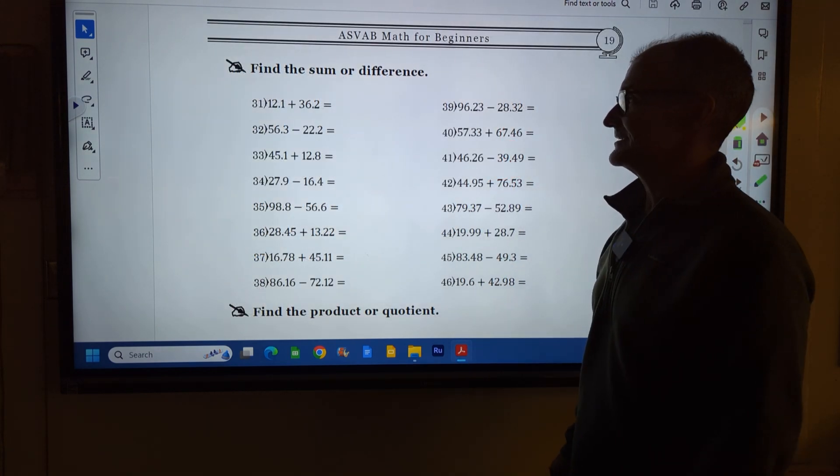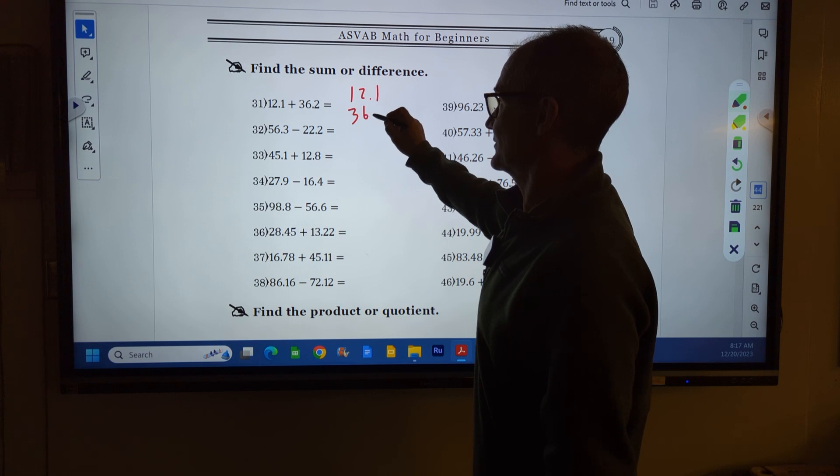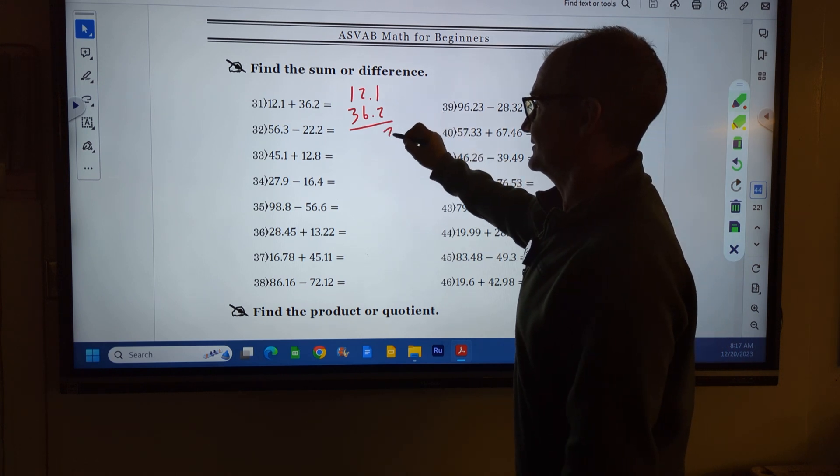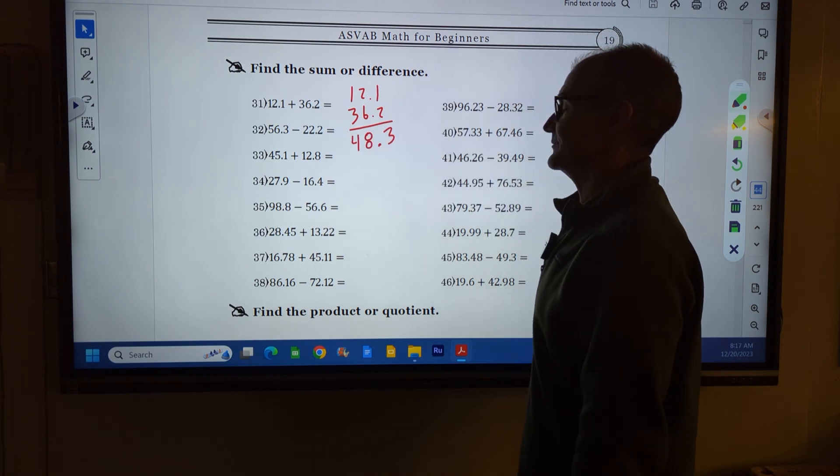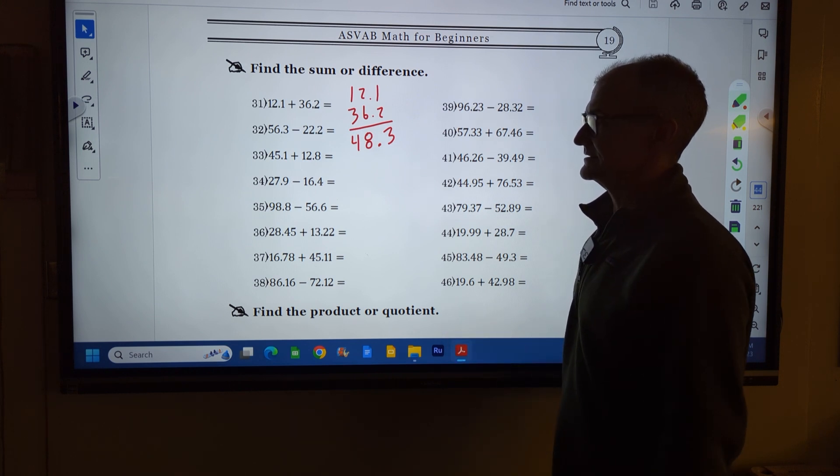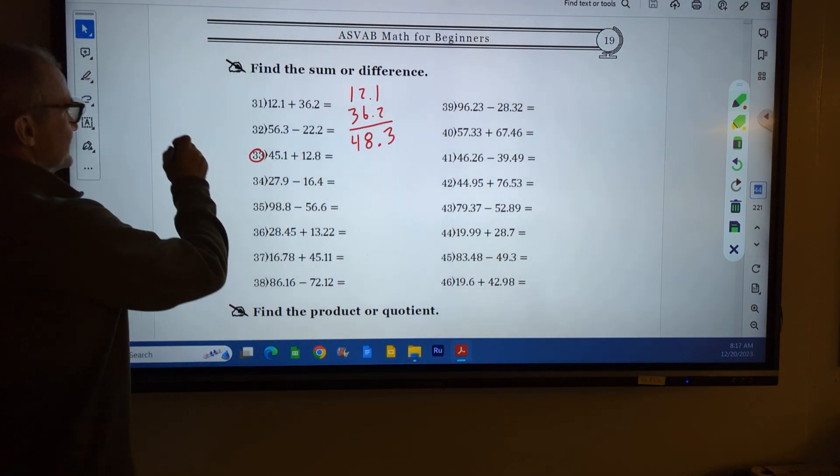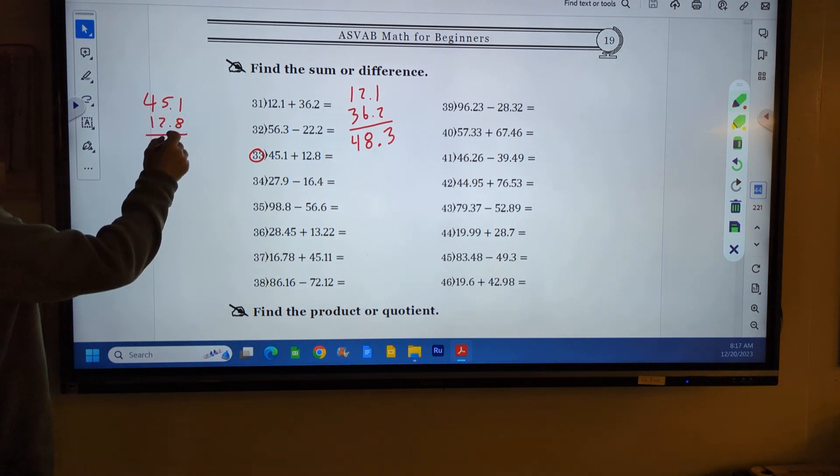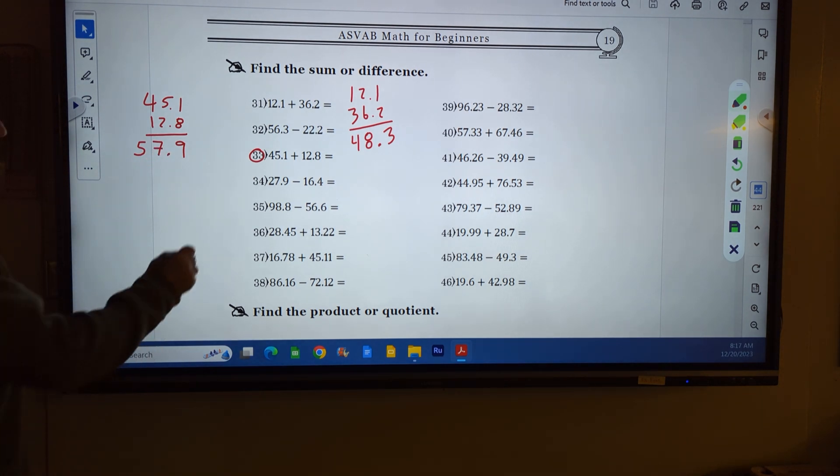Let's do some practice problems. Pause the video, do these problems and watch how I do them. I have 12.1 and 36.2. Decimal places are perfectly lined up. 1 and 2 is 3, 2 and 6 is 8, 3 and 1 is 4. Decimal place in the exact same spot. You can check these easily with a calculator. Number 33: 45.1 plus 12.8. 1 and 8 is 9, 5 and 2 is 7, 4 and 1 is 5. Decimal place comes right down.